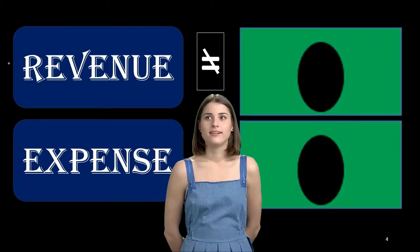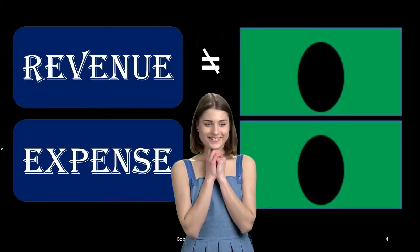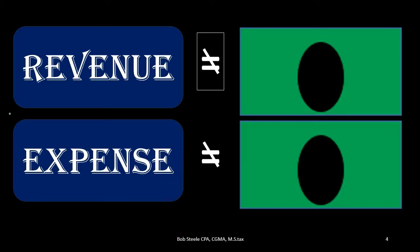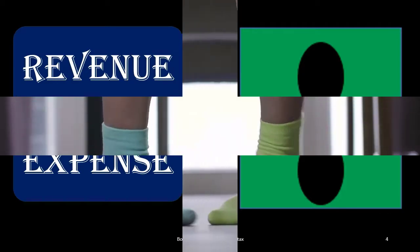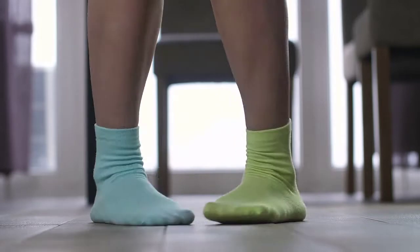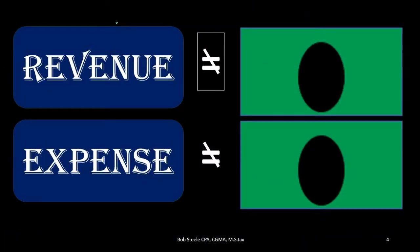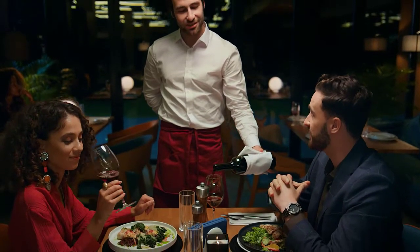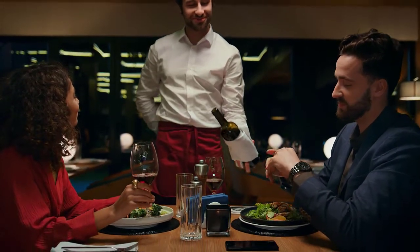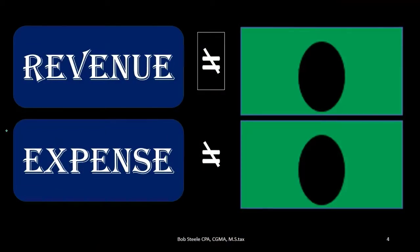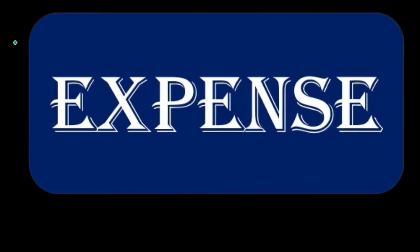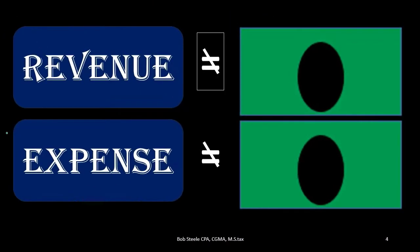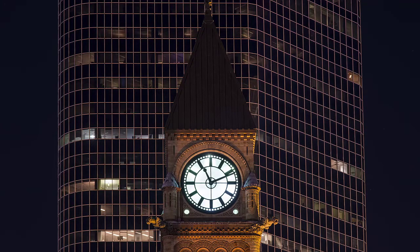So when should we recognize revenue and expenses? The answer is when they have been incurred — when we earned the revenue, meaning when the job has been done, and when we incurred the expense, meaning when we consumed an asset or incurred a liability in order to help us generate revenue in the same time period. Revenue is recognized when the business does what it does to generate revenue. Expenses are recognized when we consume something — an asset or a liability — to achieve the goal of revenue generation.